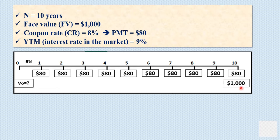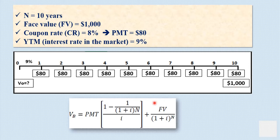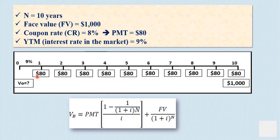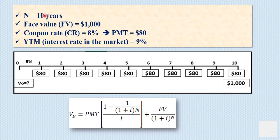Plus, we have to calculate the present value of the $1,000 separately, which is a single lump sum payment. The bond valuation formula VB has two parts: the first part represents the present value of the annuity, and the second part represents the present value of the face value. The interest rate I used in both denominators is the market interest rate — the YTM of 9% — not the coupon interest rate. The coupon rate is only used to calculate the payment, the $80. N equals 10, the maturity of the bond.